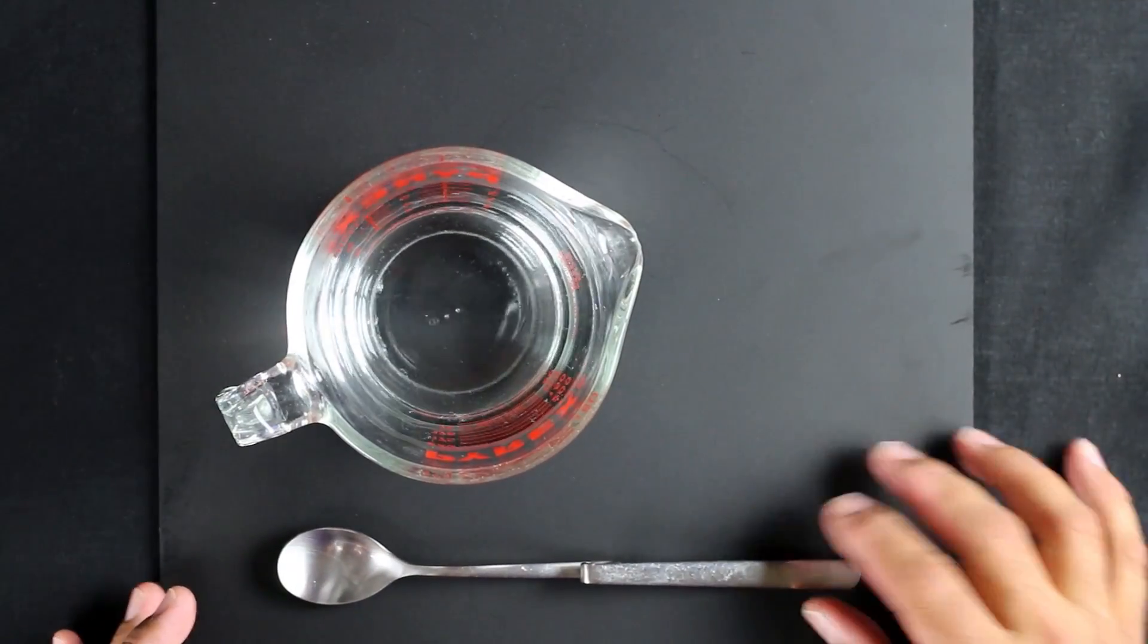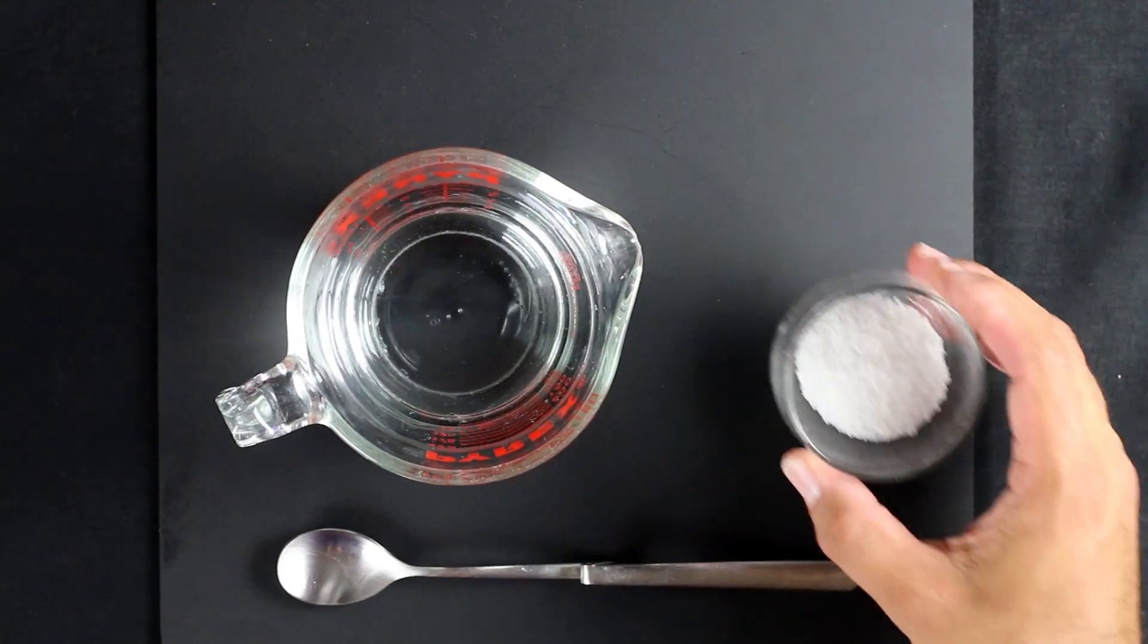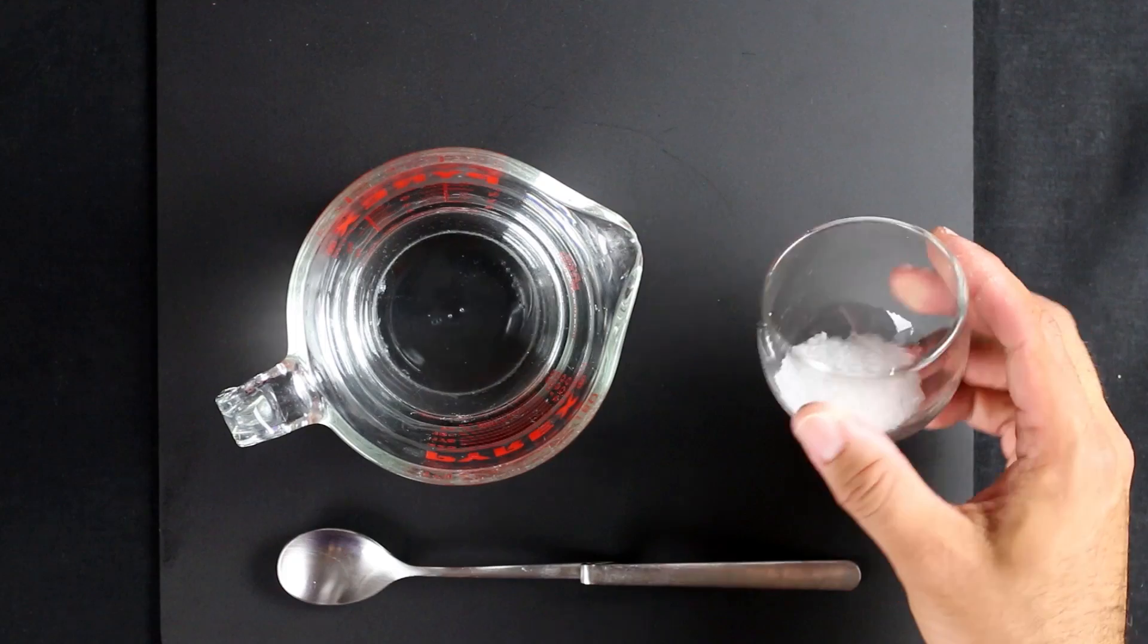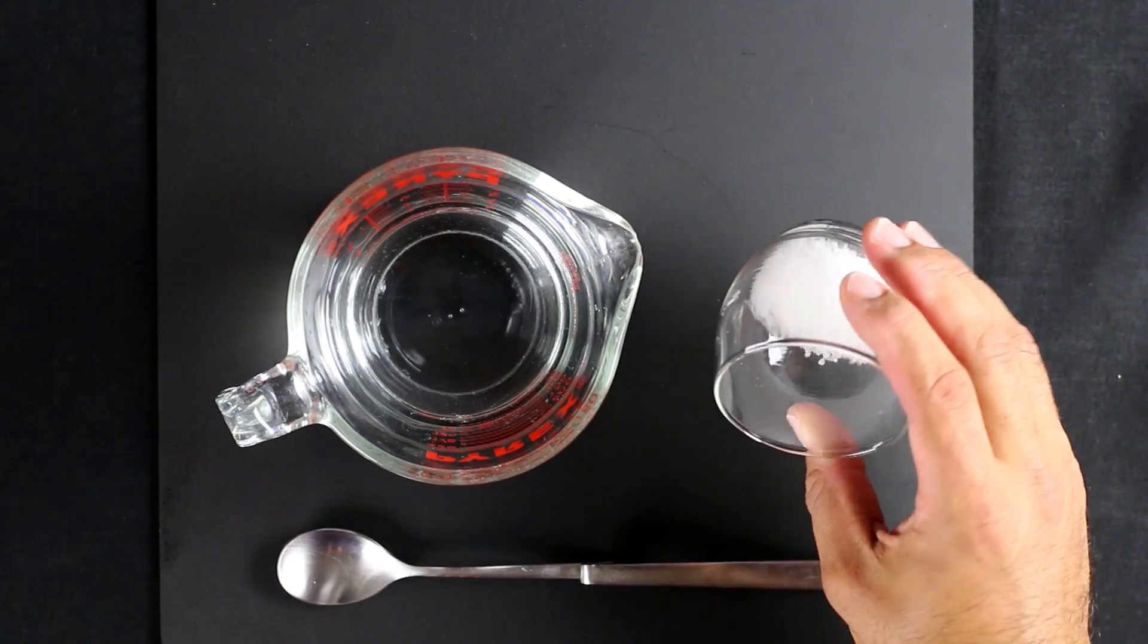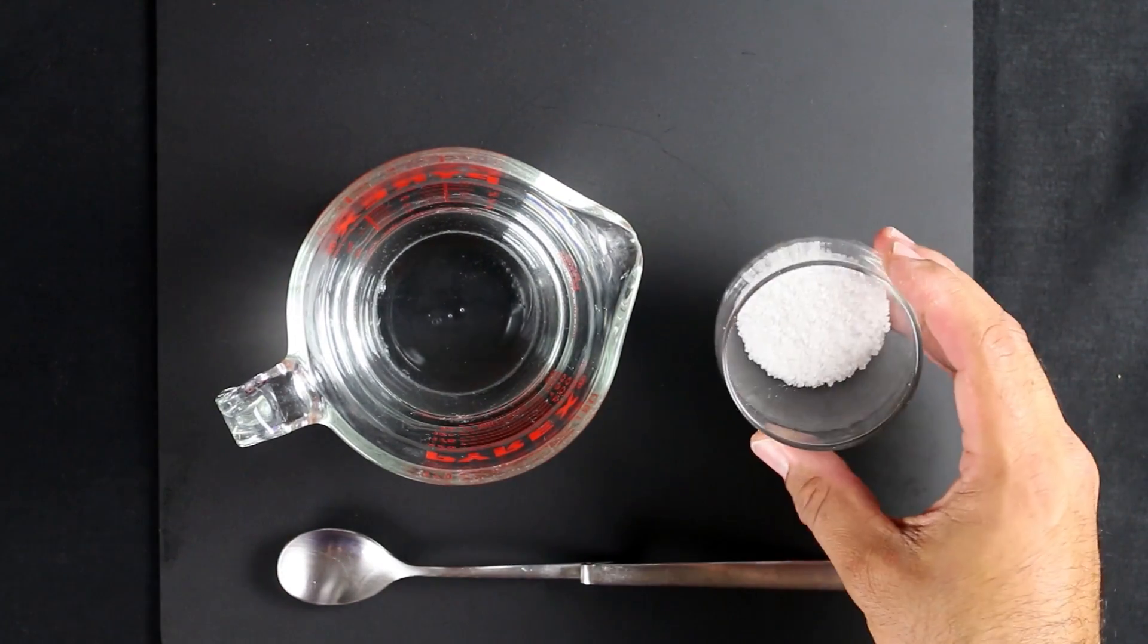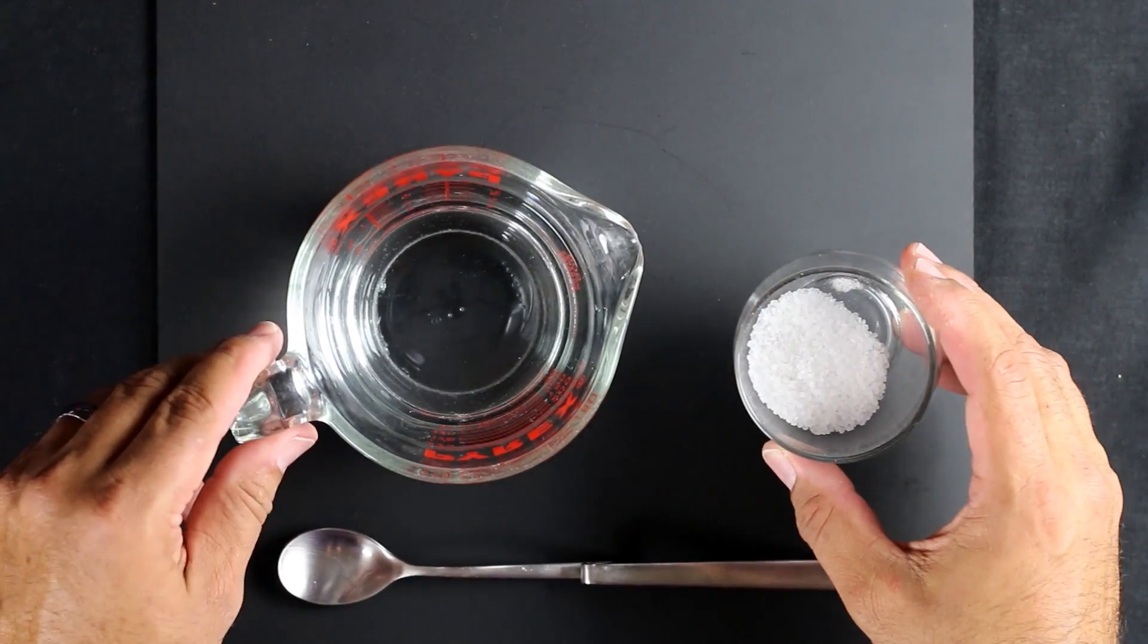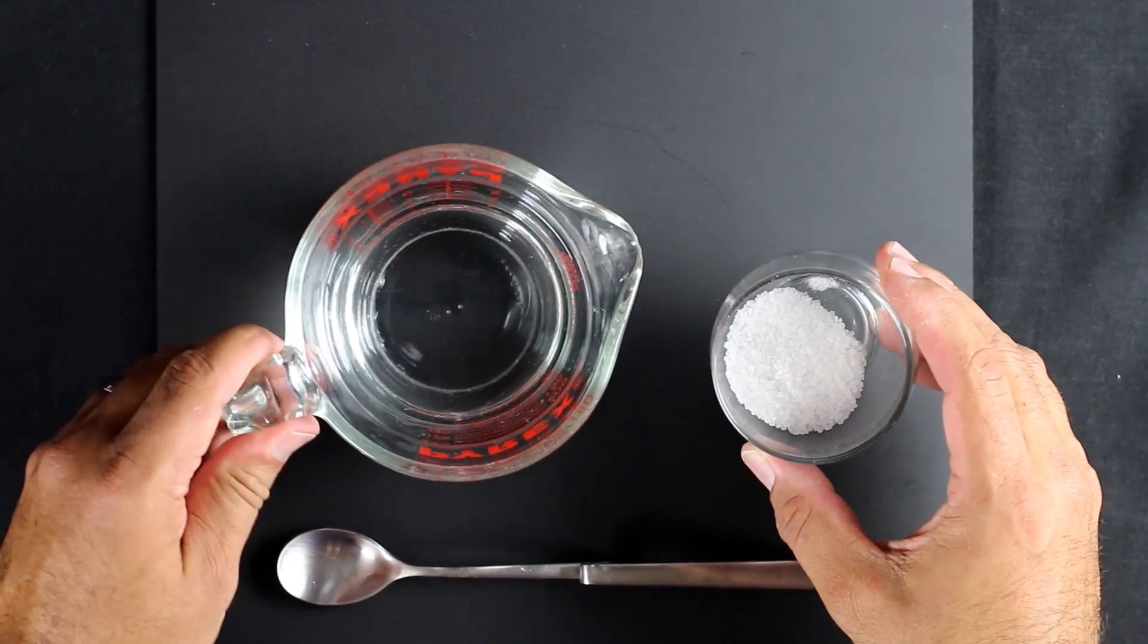So the first step is you need to gather about a tablespoon worth of salt. I like my saline solution a little more concentrated, a little more salty. So I use roughly about a tablespoon of salt and roughly about a cup of water.